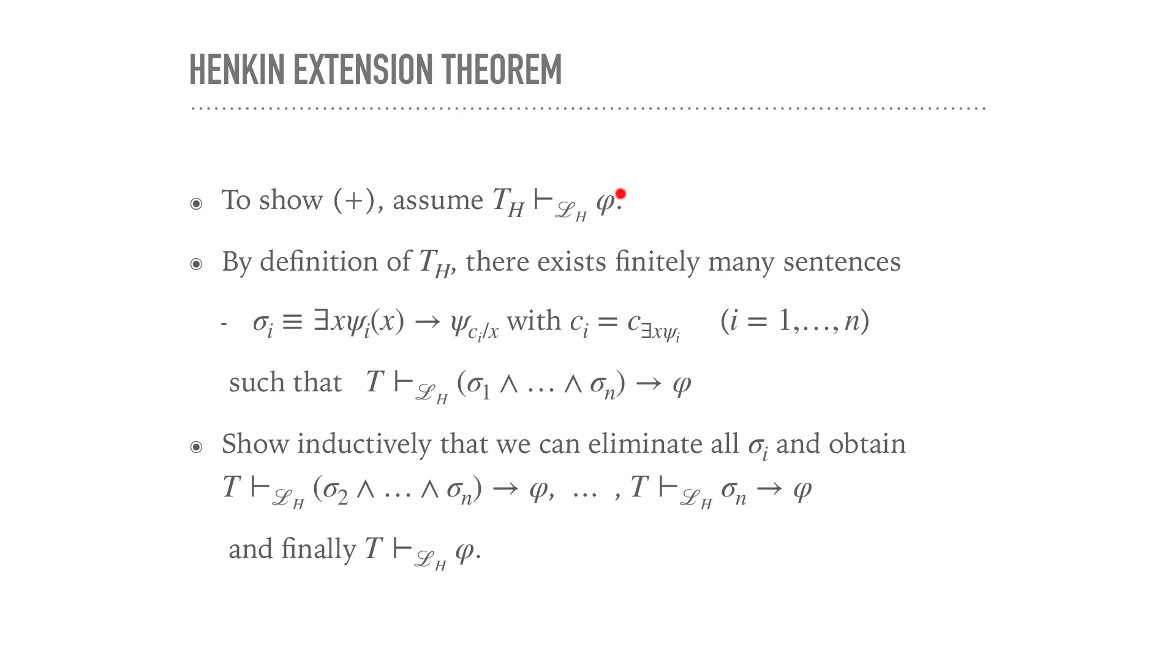So let's assume that we can prove φ over L_h from T_h. By the definition, the way that we defined T_h by an iterative extension of T, we can find finitely many sentences, because this is a proof so there's only finitely many of the extended sentences that we added to the theory over the course of this definition. There exist finitely many sentences σ_i, and each of them are of the form of those Henkin extension witnesses.